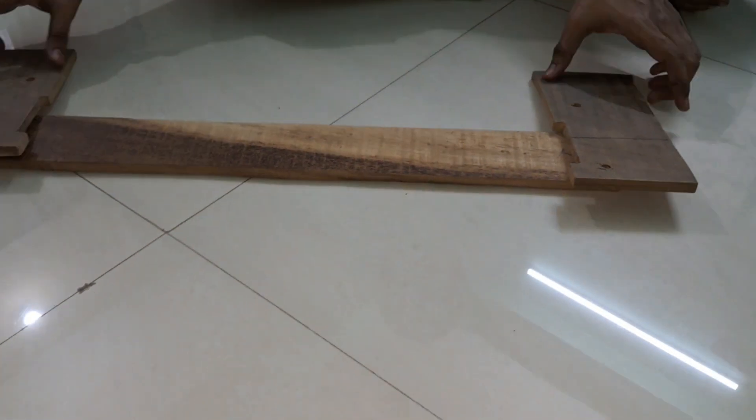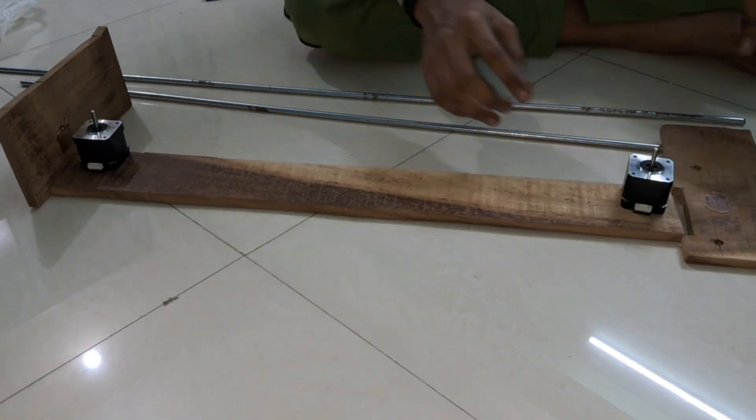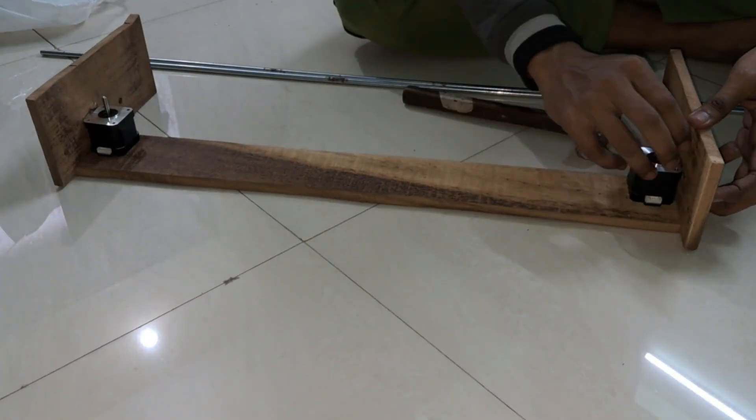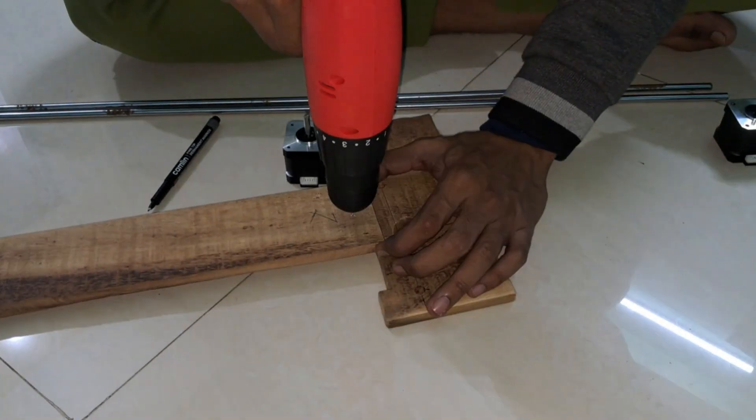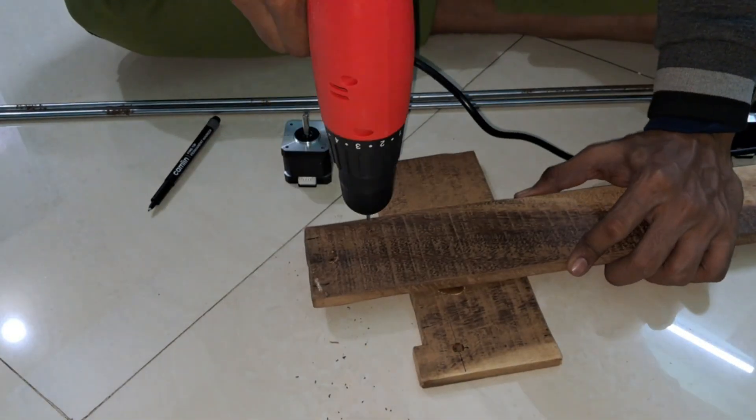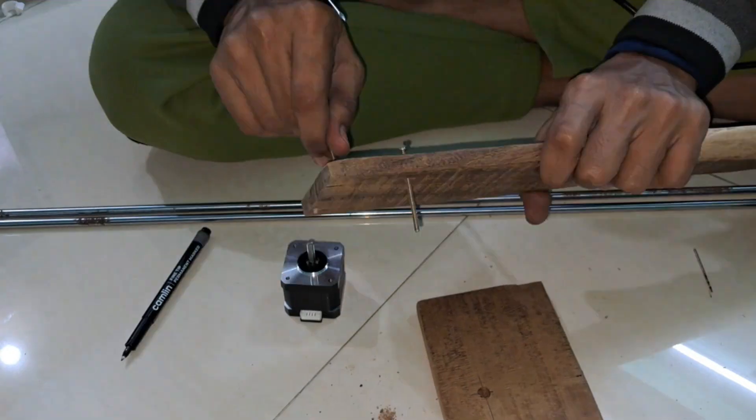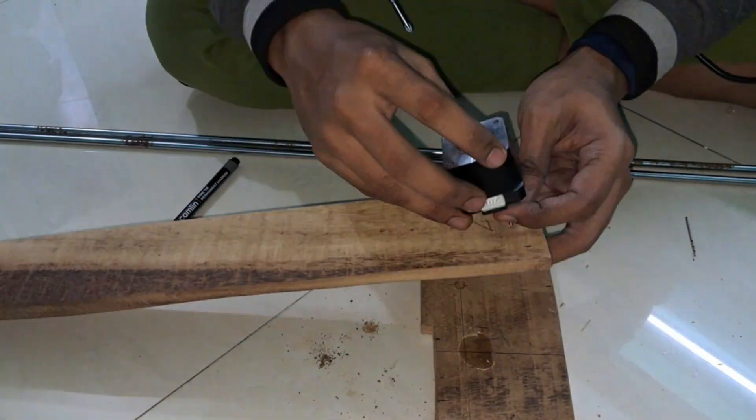Now let's connect the motors to the frame. We'll start by drilling holes in the wooden frame to mount the steel rods and the NEMA 17 stepper motors. These steel rods will guide the moving parts of the machine while the stepper motors will control movement along the X and Y axis.